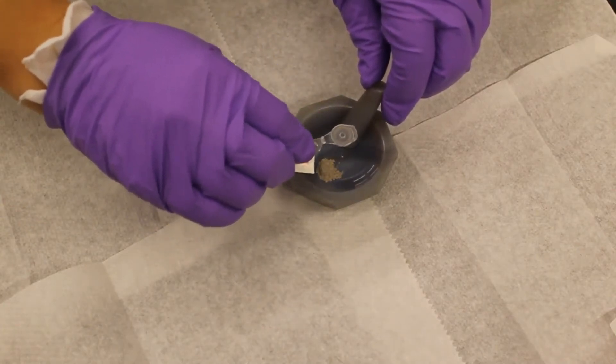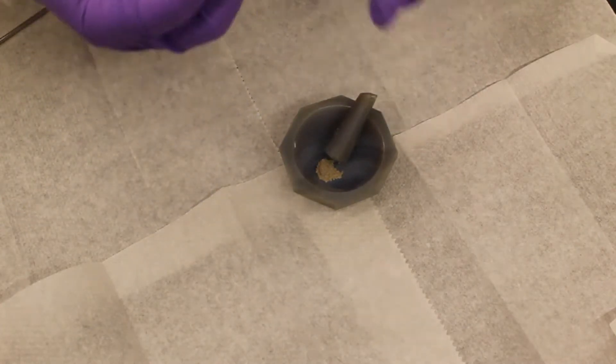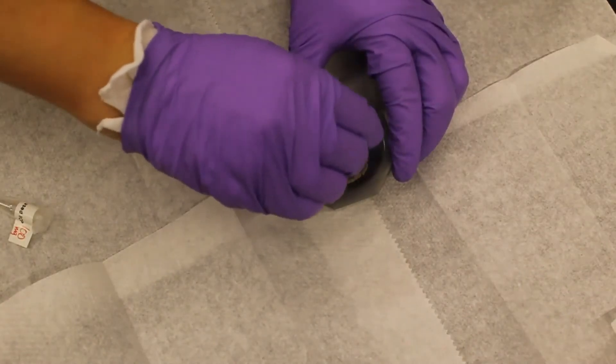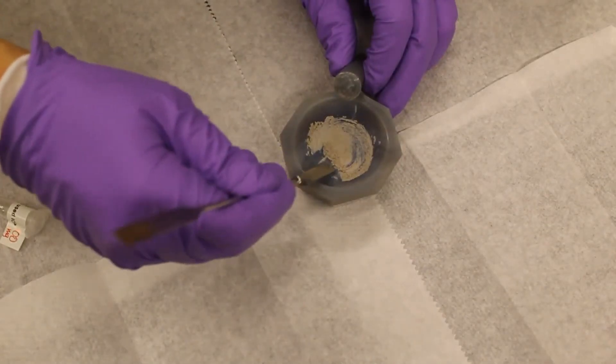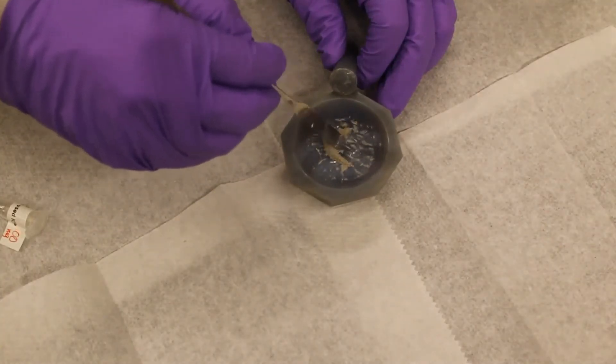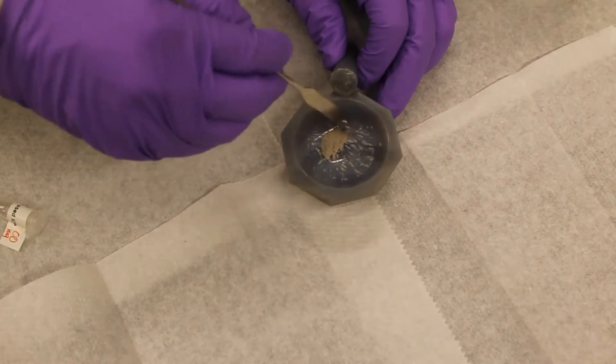First, we're going to grind the catalyst sample. We put about a 50 to 100 milligram sample into mortar and pestle and grind it for 3 to 5 minutes. We grind this one a little bit longer than usual because we want to get a fine catalyst powder.